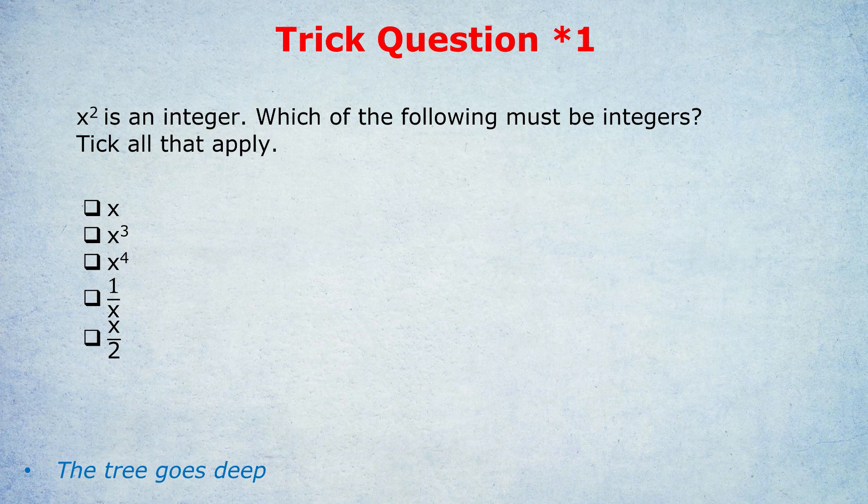Most of you would therefore not have picked the fourth and fifth box, on the basis that x could be 2 and 1 over 2 is not an integer, or x could be 3 and 3 over 2 is not an integer. And that would be correct — D and E, those two boxes are not correct.